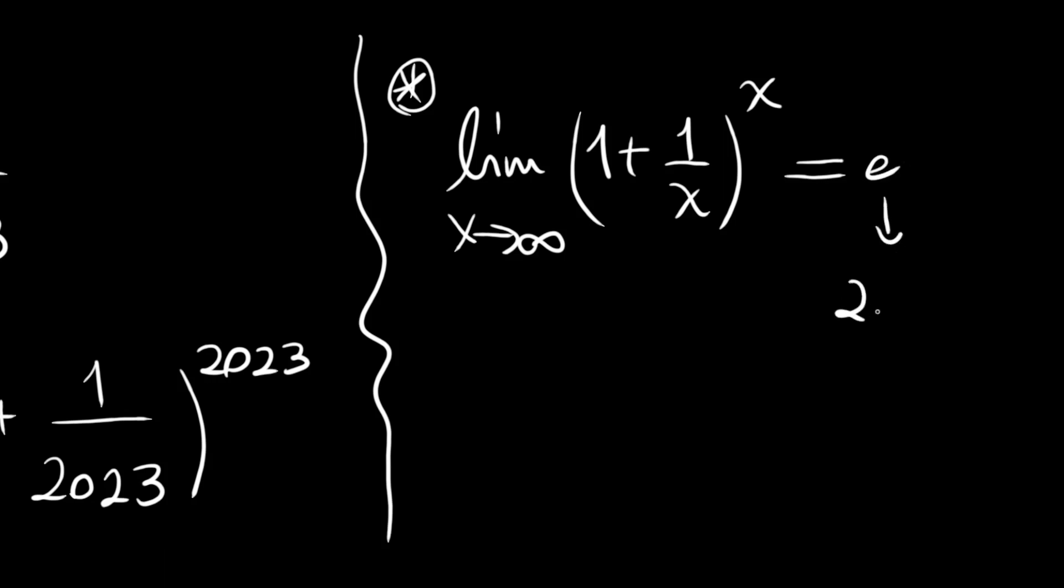approximately 2.7182 and so on. Now this number, x equals 2023, (1 plus 1 over x) to the power 2023, is quite large, so our (1 plus 1 over 2023) to the power 2023 is approximately e.